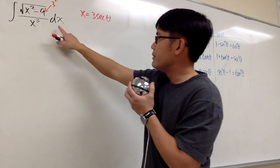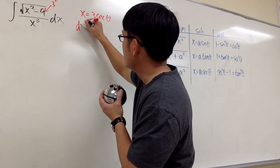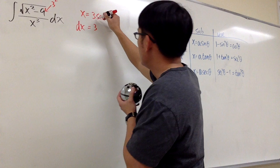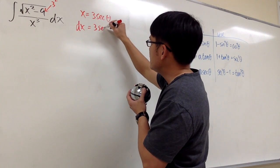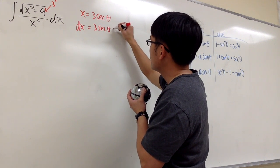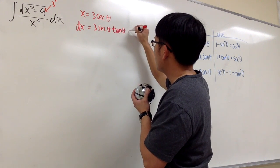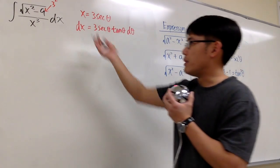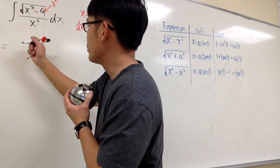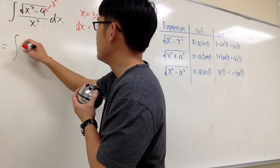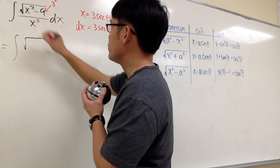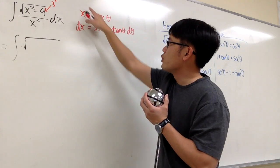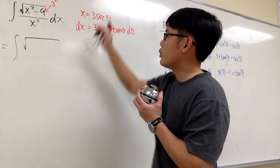We will take this integral from the x world into the theta world. Begin by saying x is equal to 3 times secant theta. We still also have to get the dx, so let's differentiate both sides. We get dx equal to 3, and the derivative of secant theta is secant theta tangent theta, and then we have d theta. Now let's plug in: we have the integral of square root of x squared. We square both sides, so x squared will be 3 squared, which is 9.